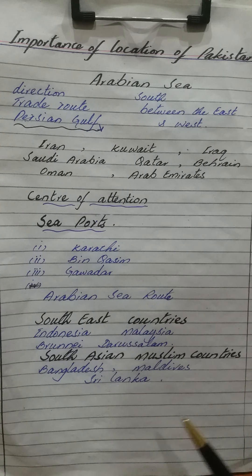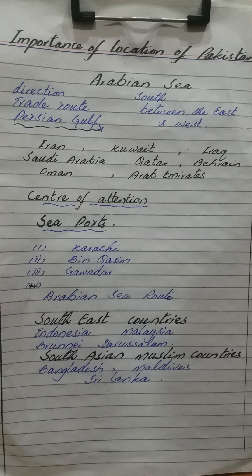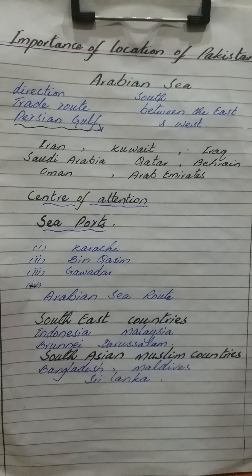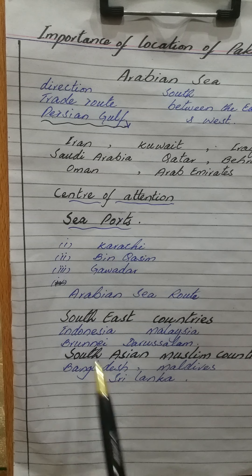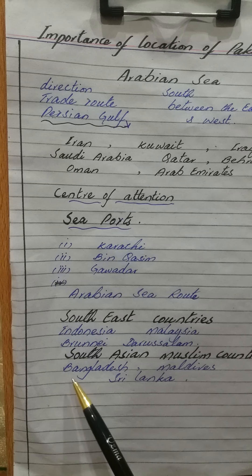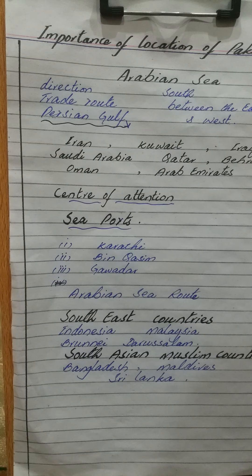If we talk about the Arabian Sea route, the southeast countries — Indonesia, Malaysia, Brunei Darussalam — are located towards the south-east and are all very important Islamic countries. The next point is about South Asian Muslim countries like Bangladesh and the Maldives, and the non-Muslim country Sri Lanka. These are all important countries connected with Pakistan through the sea route.